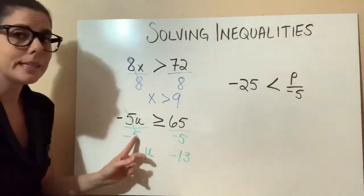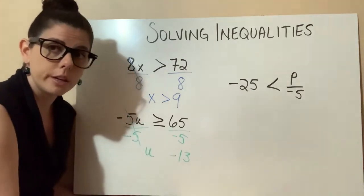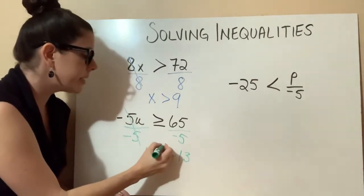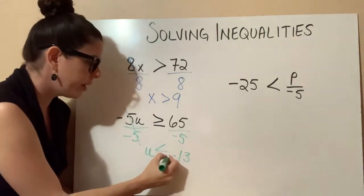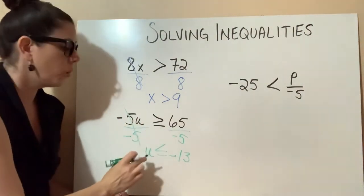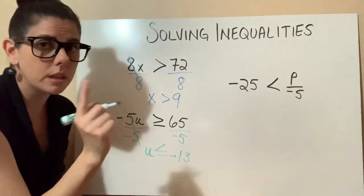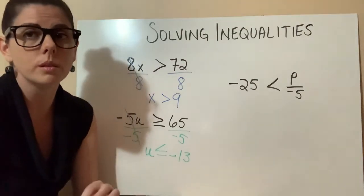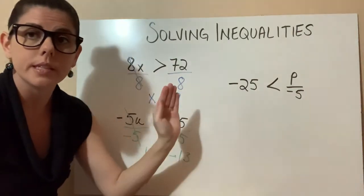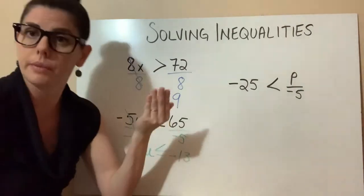Because we had to divide by a negative 5, this used to be a greater than or equal to sign. But because we divided by a negative number, this sign is going to flip direction. Instead of having u is greater than negative 13, we're going to have u is less than or equal to negative 13. That's the trick you need to remember: if you divide or multiply by a negative number in an inequality, then the sign is going to flip. That negative means change.